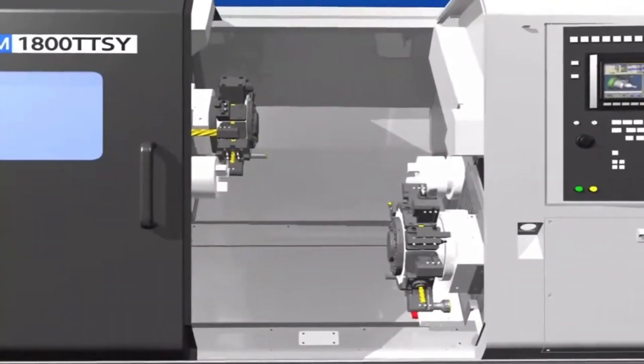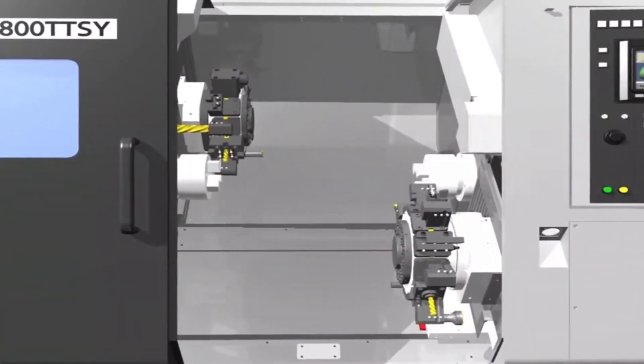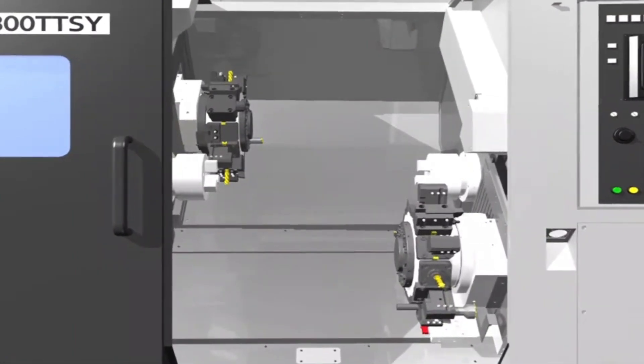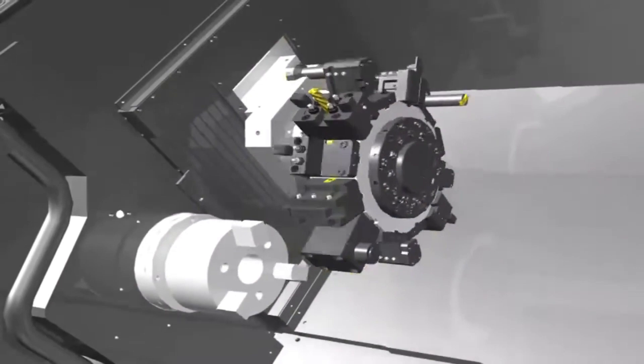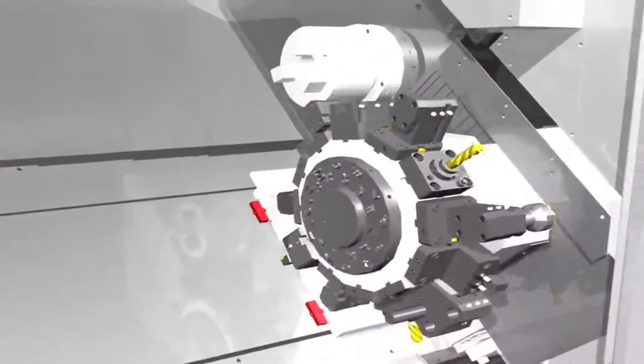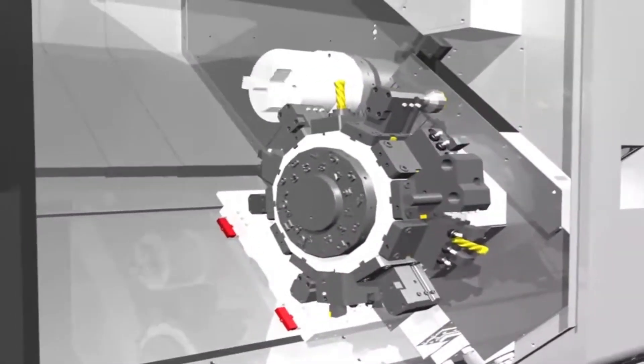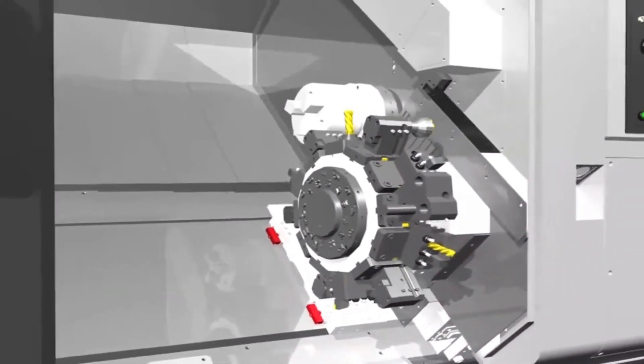LM1800 TTSY is equipped with main, sub-spindle, upper-lower turrets to improve productivity and shorten cutting time. At the same time, LM1800 TTSY can cut any type of form in top quality to qualify customers' needs.